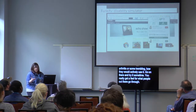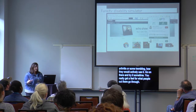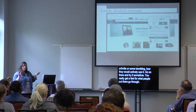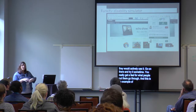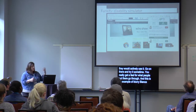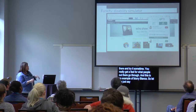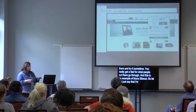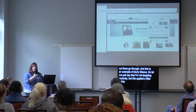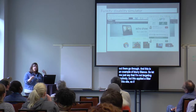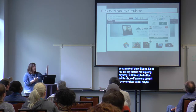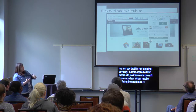Here's an example of the Blurry Bianca filter — it applies a blur to the site. Someone without very clear vision, perhaps suffering from cataracts or needing glasses, might see the site this way. That's an example of what they see.